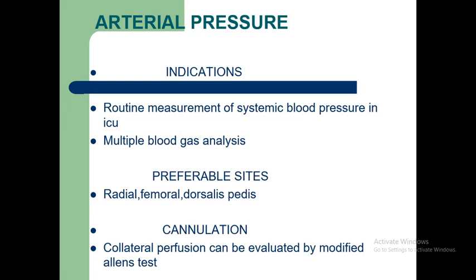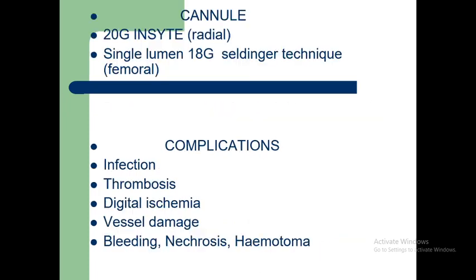Indications for arterial pressure monitoring include routine measurement of systemic blood pressure in ICU and the need for multiple blood gas analyses. Preferred sites are radial, femoral, and dorsalis pedis — most common is radial. Collateral perfusion can be evaluated by the modified Allen's test — by pressing the radial and ulnar arteries together and releasing one; if blood circulation returns quickly to the palm, there is good collateral circulation. For the radial site, a 20-gauge cannula is used; for femoral cases, an 18-gauge Seldinger technique cannula is used.